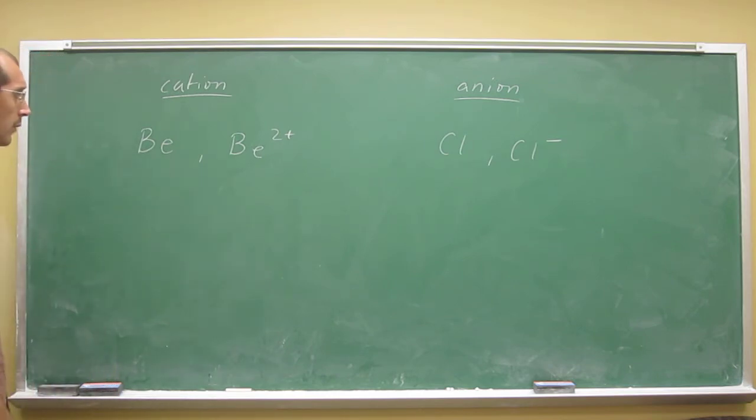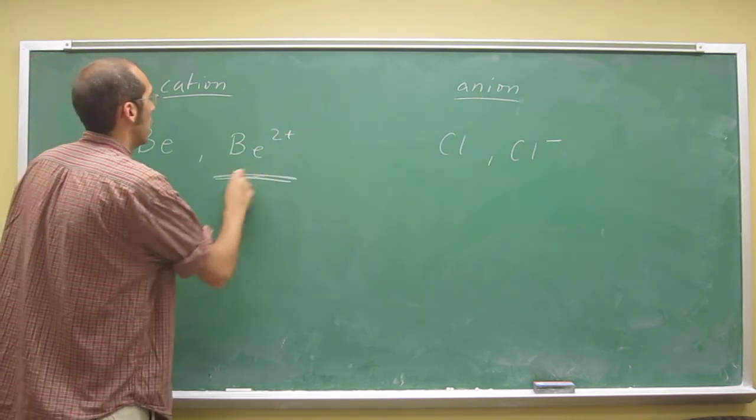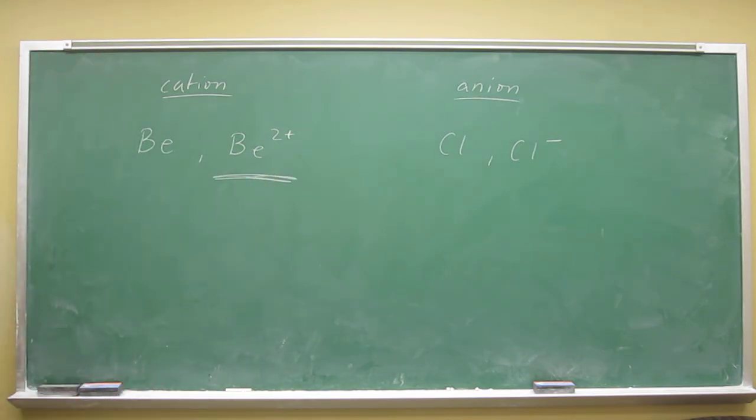So which one of these is smaller? Let's just do smaller. So it would be the beryllium 2-plus cation.